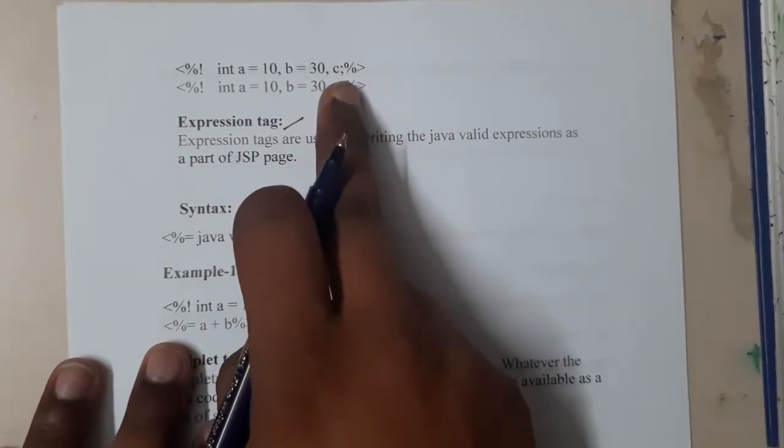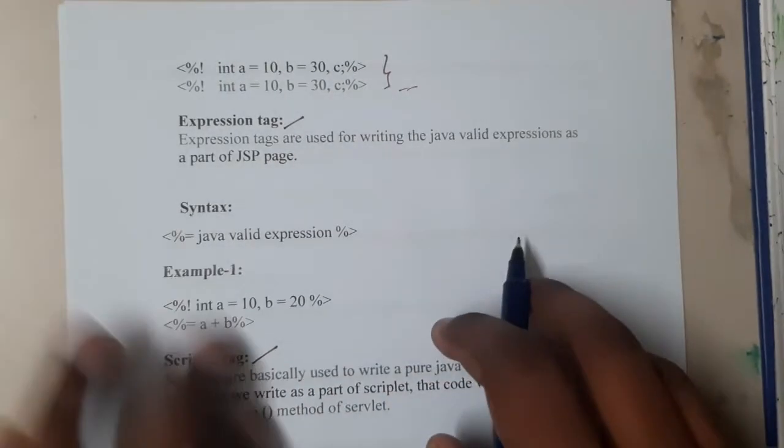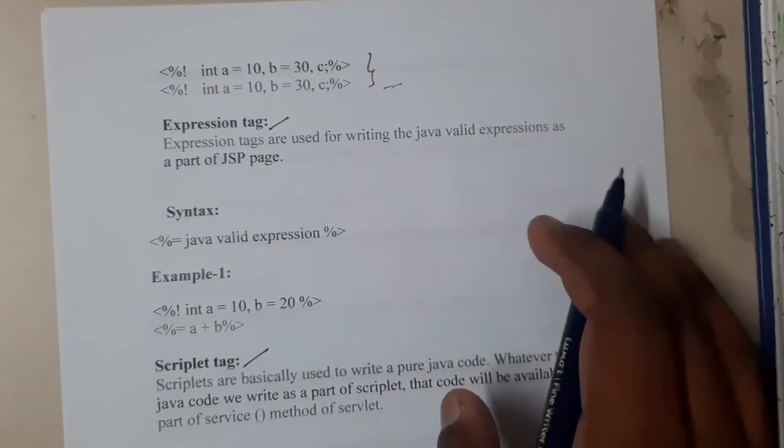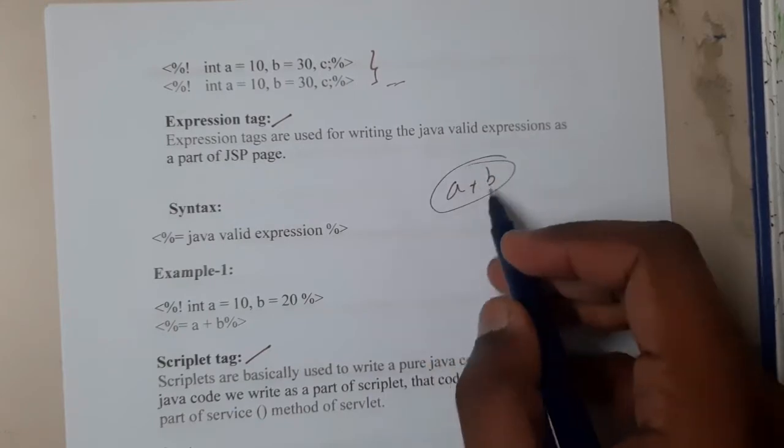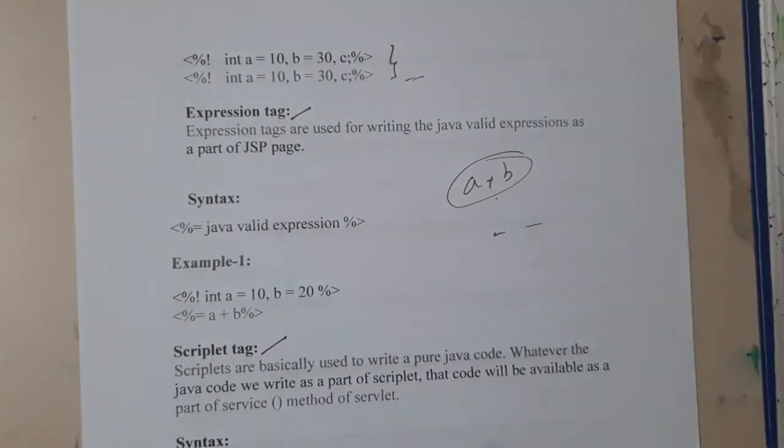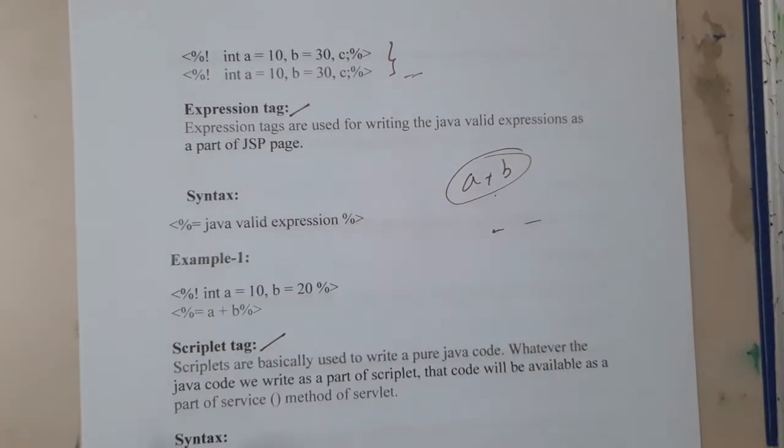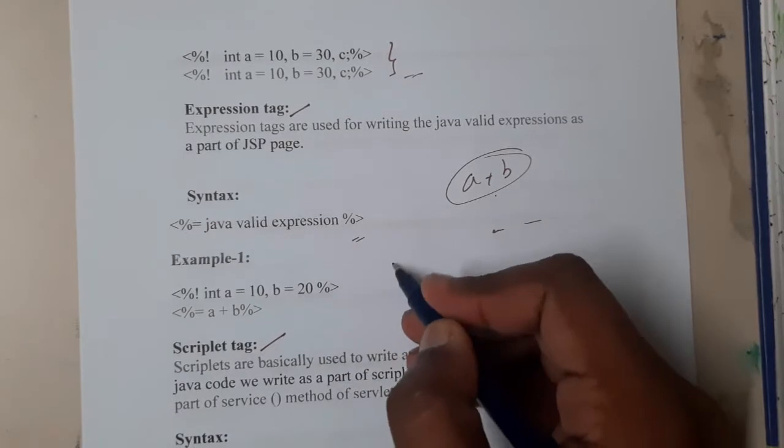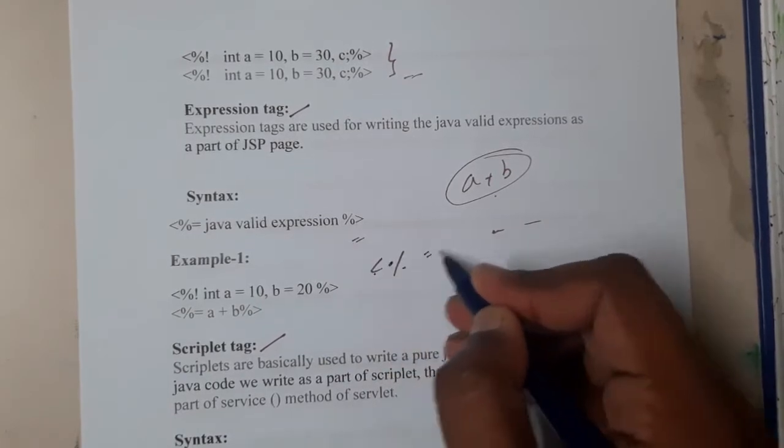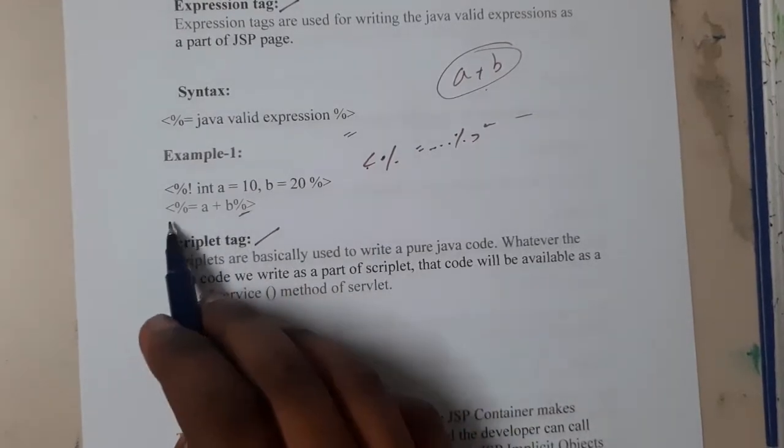Similarly, expression tags. Expression tags are used for writing the Java valid expressions as a part of JSP file. It is represented in this way: equal to, here you will be writing the code, it will be in this way.